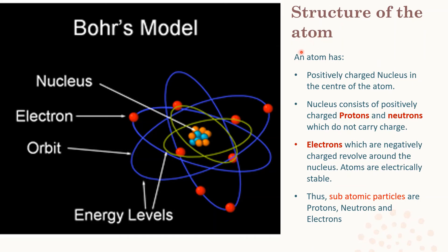Our next chapter, Structure of the Atom, is also included in this presentation. Scientist Niels Bohr presented a model to explain atomic structure. As per Bohr's model, atoms have a centrally placed nucleus with positively charged protons and neutrons (which carry no charge). Electrons revolve around the nucleus in specific orbits called energy levels — they are called energy levels because they radiate energy once they leave these orbits, but do not radiate energy while revolving within them.